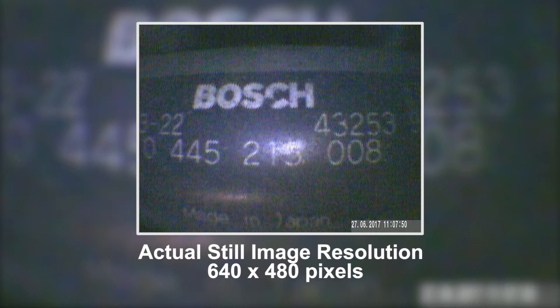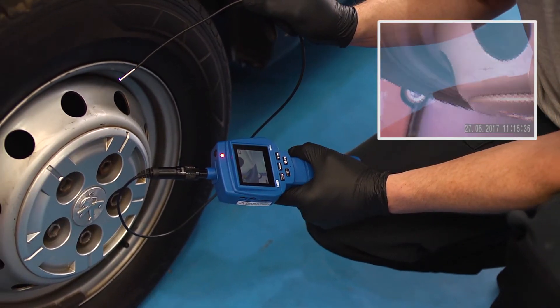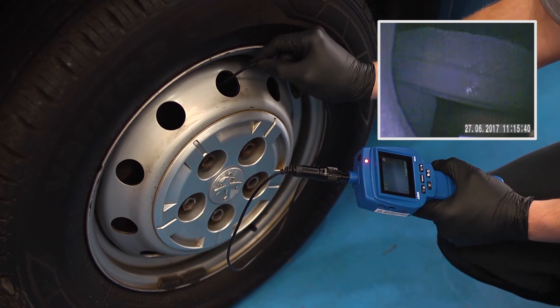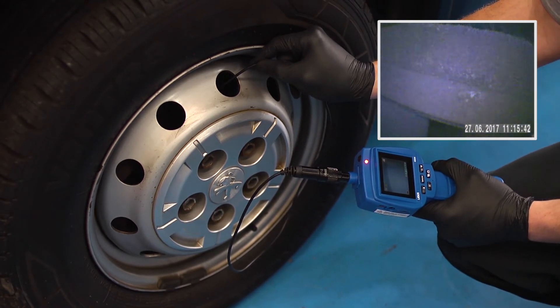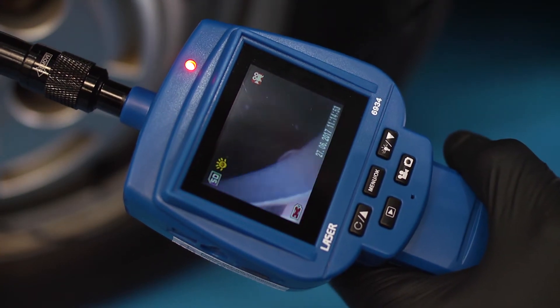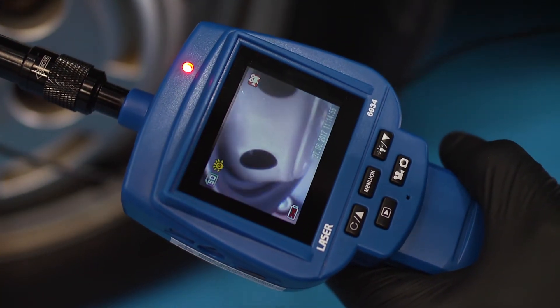Still images can also be saved. Now we will demonstrate how easy it is to check for brake pad wear without taking the wheels off. Look at that. The depth of pad material is easy to see and all recorded to show your customer.